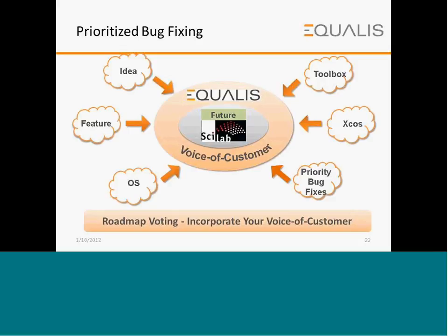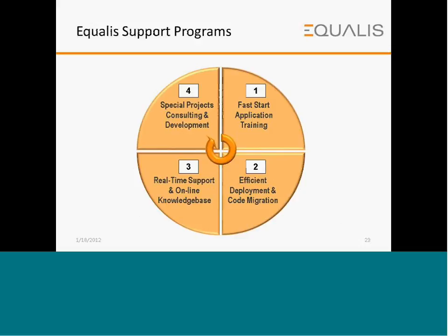Future SciLab modules are strategically being developed based upon the voice of customers and incorporated into toolboxes and other features. Equalist support programs offer fast short application training, efficient deployment and code migration, real-time support, and an online knowledge base, in addition to special project consulting and engineering development.